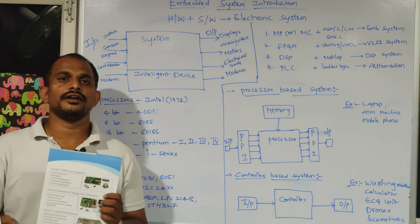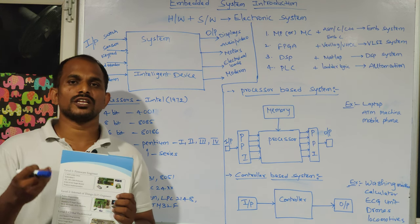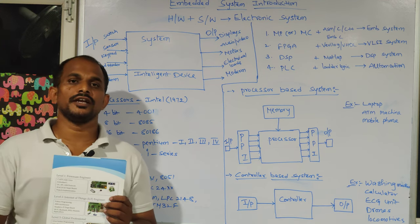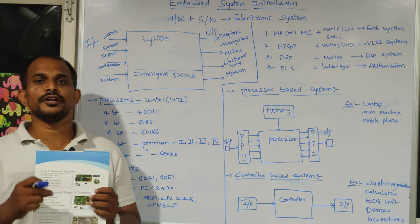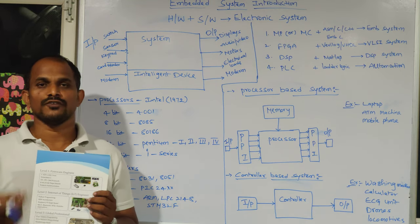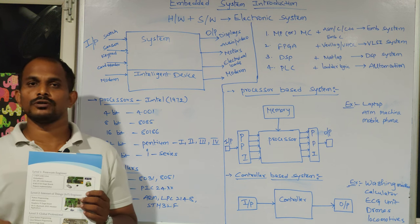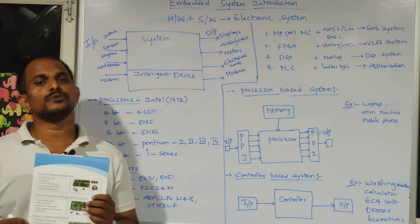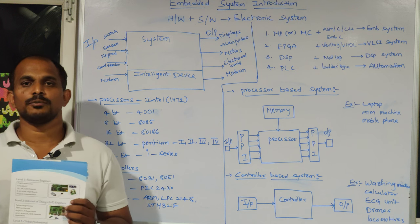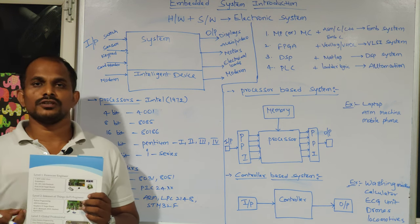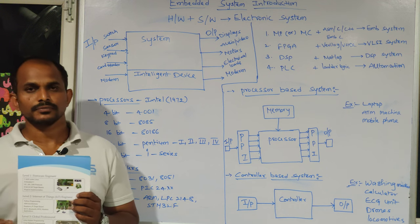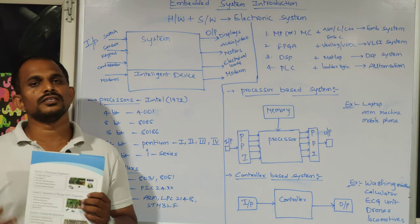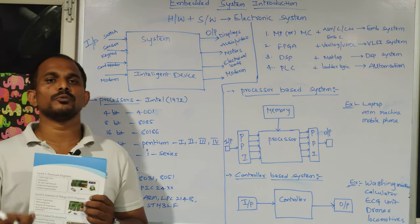At level 2, you move into two categories: IoT and automotive. For IoT, we cover Python programming with 32-bit boards. To make internet-of-things applications, you take data from an existing electronic system to the internet using mediums like Wi-Fi, Ethernet, or Bluetooth. This requires knowledge of front-end concepts and Python scripting as additional skills.